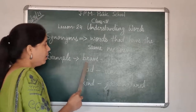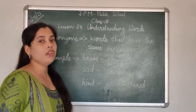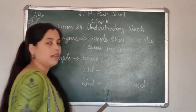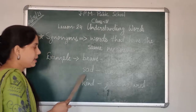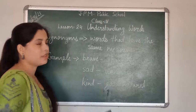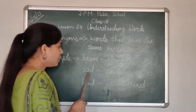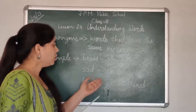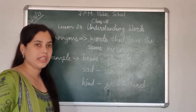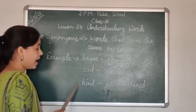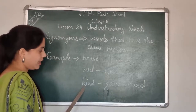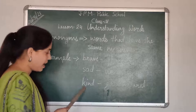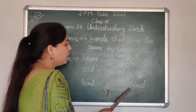The words which have the same meaning but different spellings and different pronunciations are known as synonyms. For example, brave — brave means a person who does not have fear. The other word for brave can be fearless. Second example is sad — sad means a person who is not happy. We can also use the word unhappy in place of sad because both these words have the same meaning. Our next example is kind — kind means a person who has good nature. We can use good-natured in place of kind.